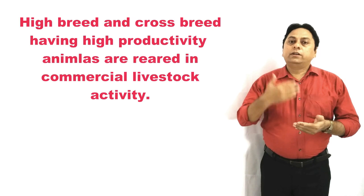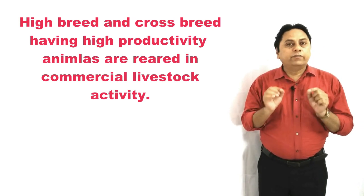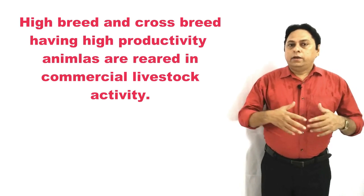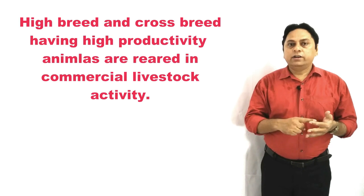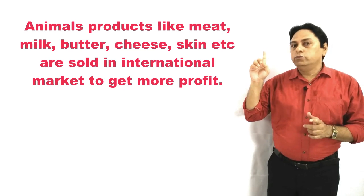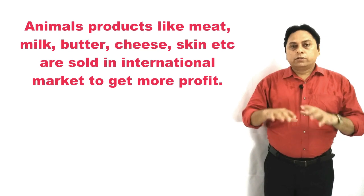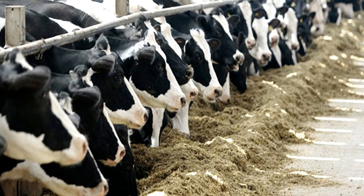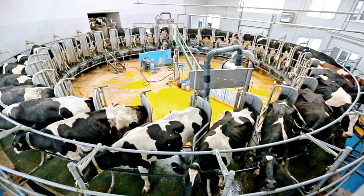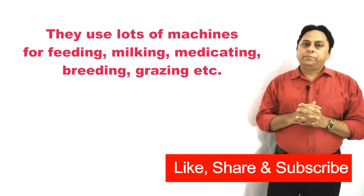In commercial livestock rearing, hybrid and cross-bred, very advanced varieties of animals are reared — indigenous varieties are not reared here. These hybrids have high productivity and can provide more amounts of milk, meat, skin, fur, and other animal products. The products are not sold in the local market but in the international market. The main objective is to earn profit, so a variety of machines are used and all activities are highly automated — from feeding the animals, providing medicine and vaccines, to air-conditioned stables for the animals. Even some robots are used to provide food to the animals.